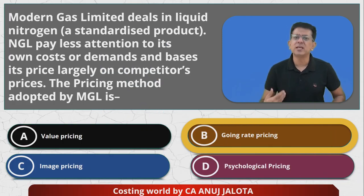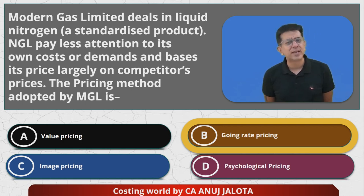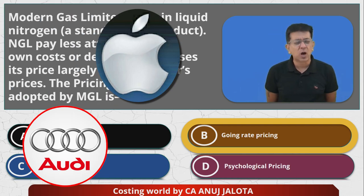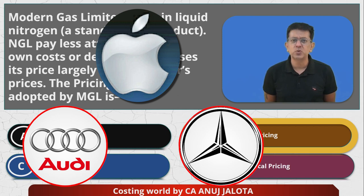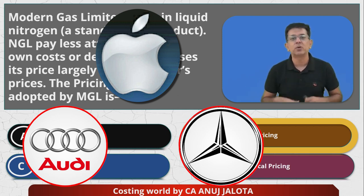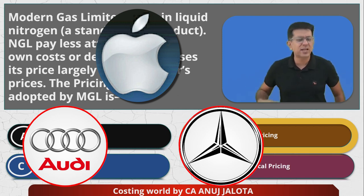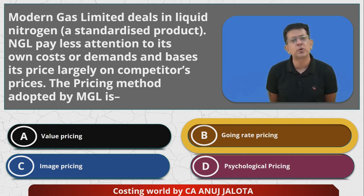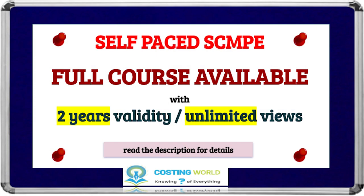Image pricing, as I mentioned, is done by companies like Apple, Audi, and Mercedes, which need to carry a certain premium brand image. Psychological pricing works on perception of price points. So the final answer for this question is going rate pricing. That's it.